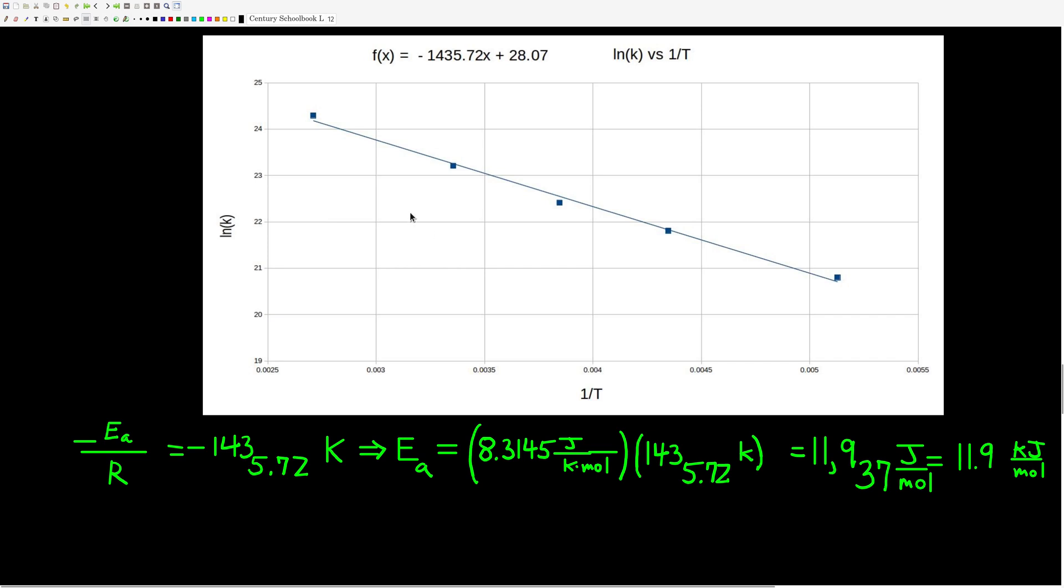Welcome back, guys. Here's what I got. I got this line, which is pretty straight. There's my slope. This slope here is equal to negative Ea over R. Rearranging to solve for the activation energy, multiplying by negative R, the negatives go away, 8.3145 times the slope, and we get 11,937 joules per mole. Or, if we put this in kilojoules per mole, which is pretty common, 11.9 kilojoules per mole.